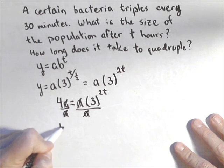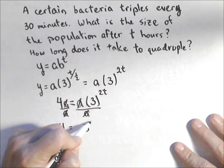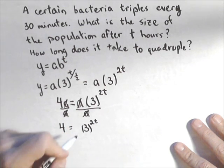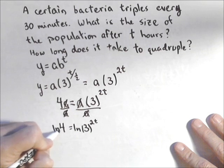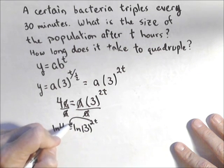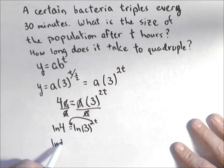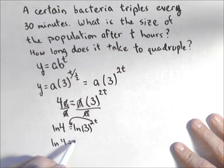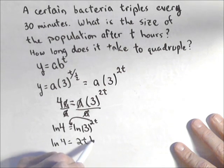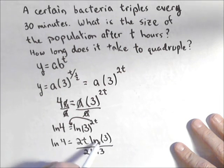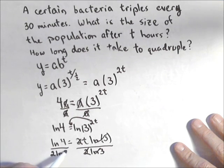So I have four equals three to the two t. And now we're at the point where we wanna employ log or natural log. I'll use natural log this time, because that allows me to pull the exponent out front. So I have natural log of four equals two times t, times natural log of three. Divide both sides by two natural log of three, because I wanna get rid of these. So I divide by two ln of three.